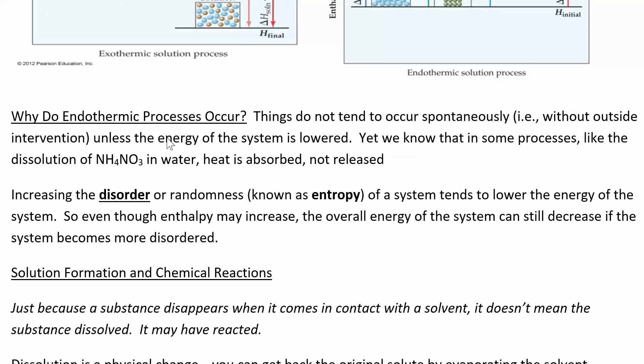Why do endothermic solution processes even happen? If you have to put energy into the system, why would that occur spontaneously? It can happen if it's accompanied by an increase in entropy — the disorder or randomness of the system. Entropy can pull along an endothermic process and make it happen. This is a teaser for chapter 19 on thermodynamics: you can't just look at whether something is endothermic or exothermic to determine spontaneity — you have to take entropy into consideration as well. Things like to mix because it increases the entropy of the system, which can drive the reaction in the forward direction.